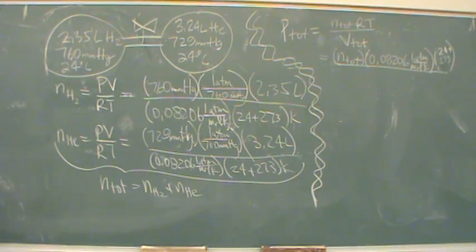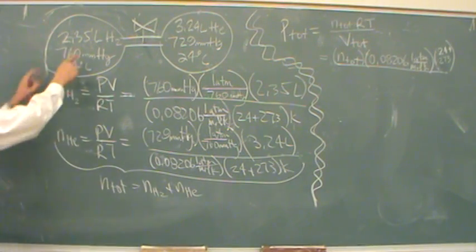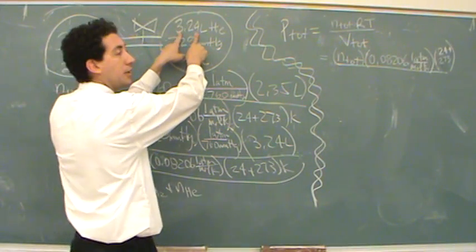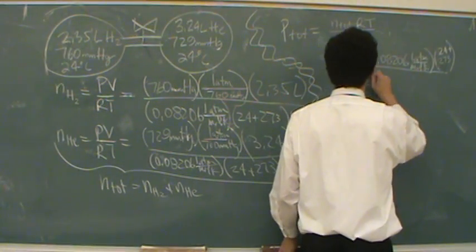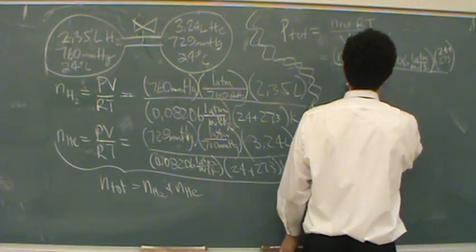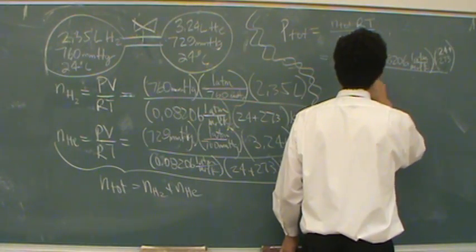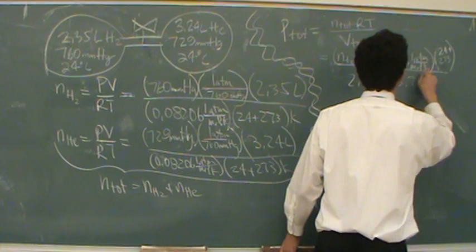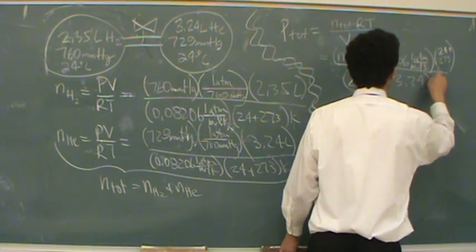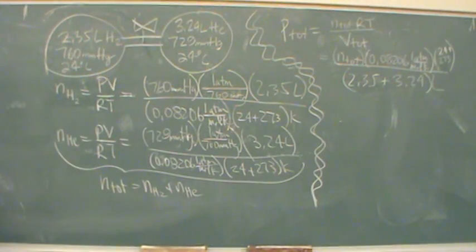The volume's going to change because now it's bigger. Remember, they can go back and forth between the right and the left. So, this could be 2.35 plus 3.24, of 2.35 plus 3.24. It's going to be in liters, and that'll be the total volume. Whatever that number ends up to be is going to be the total pressure of both, of the system once you've opened the valve.